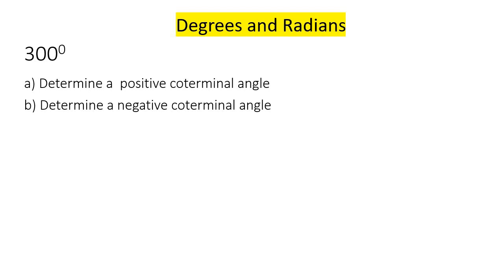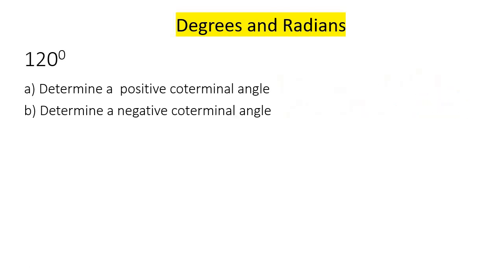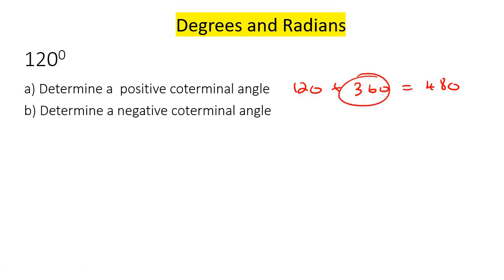Here's our first example — it's degrees. Find a positive coterminal: I'm going to add 360, because if I subtract that's going to give me a negative answer. So there's your positive coterminal angle. Determine a negative coterminal: just say 300 take away 360. And that's another coterminal. Here's another degree example — to find the positive one, add 360, and that gives me 480. Then subtract 360, and that gives me negative 240.